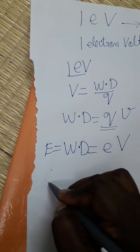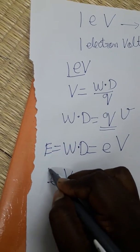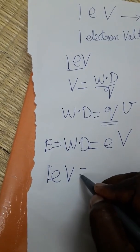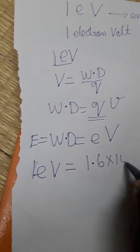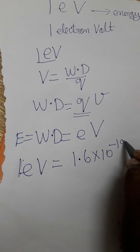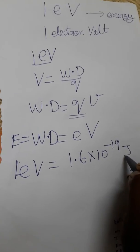eV is the unit of energy. So 1eV is equal to 1.6 into 10 power minus 19 Joules.